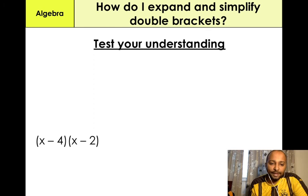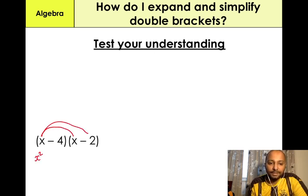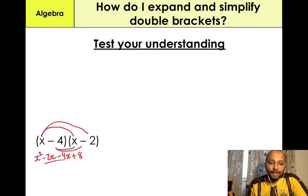We have (x − 4)(x − 2). FOIL method — expand the brackets. First: X times X — X squared. Outer: X times minus 2 — minus 2X. Inner: minus 4 times X gives us minus 4X. Last: minus 4 times minus 2 gives us positive 8. Simplifying by collecting the terms in the middle: minus 2X minus 4X gives us minus 6X plus 8. That's our final answer.